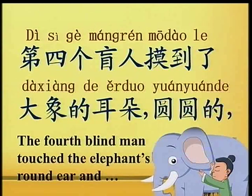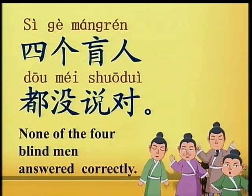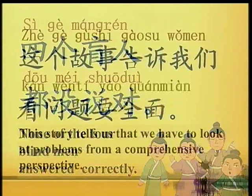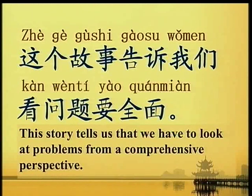第四个盲人摸到了大象的耳朵，圆圆的。 The fourth blind man touched the elephant's round ear and 她就说大象像一把扇子。 said that the elephant was like a fan. 四个盲人都没说对。 None of the four blind men answered correctly. 这个故事告诉我们看问题要全面。 This story tells us that we have to look at problems from a comprehensive perspective.